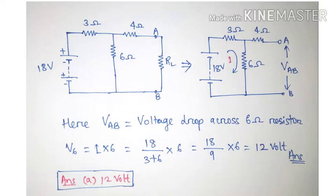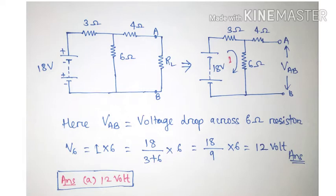First, remove the load resistance. At points A and B, we will calculate the open circuit voltage. In figure 2, I have removed the load resistance. The voltage across Vab, or the voltage across AB, is the open circuit voltage at the terminal AB, which is equal to the voltage drop across the 6 ohm resistor.